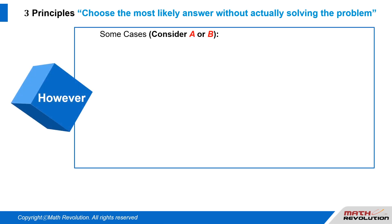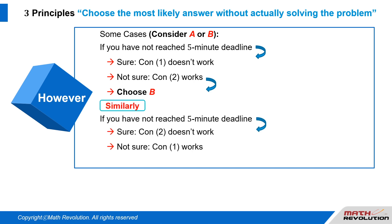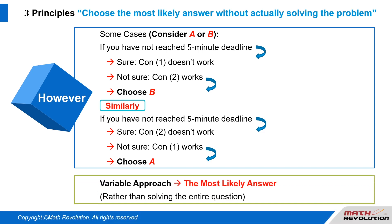However, in some cases, consider A or B. If you have not reached the five-minute deadline and you know for sure that condition 1 doesn't work but aren't sure about condition 2, just choose B. Similarly, if before the five-minute deadline you know for sure that condition 2 doesn't work but are not quite sure about condition 1, just choose A. The variable approach helps you get a high score by choosing the most likely answer rather than solving the entire question.